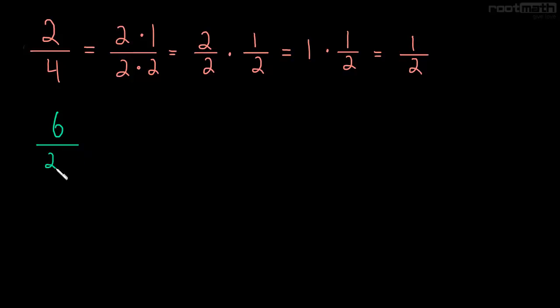Let's see another example. 6 over 27. Well, 6 is 3 times 2, and 27 is 3 times 9. And, again, we can split this up into two fractions. So, we end up with 3 divided by 3 times 2 divided by 9. The 3 over 3, that just becomes a 1. So, we're left with 1 times 2 over 9, which, of course, is just 2 over 9.